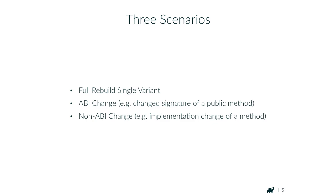It's all publicly accessible. The scenarios we will look at in more detail when we show the performance numbers are the three most common build scenarios for developers: a full rebuild of a single variant, an ABI change — meaning changing the signature of a public method — and a non-ABI change, for example changing the implementation of a method.